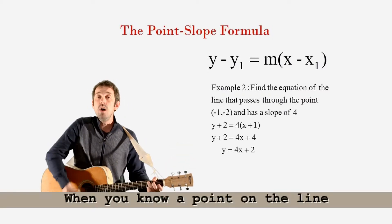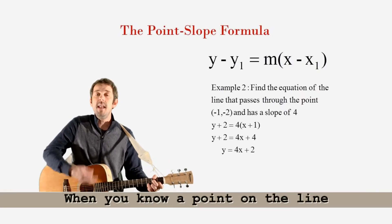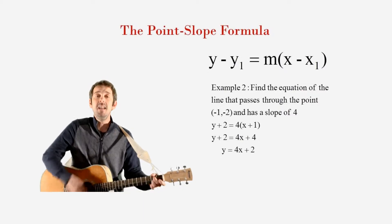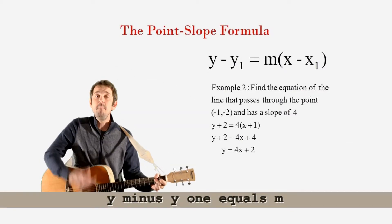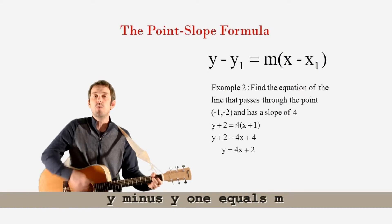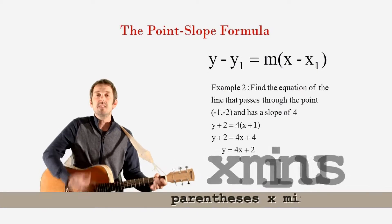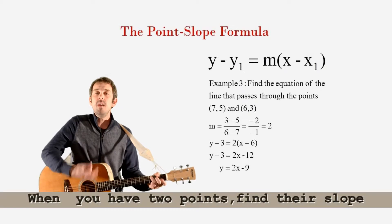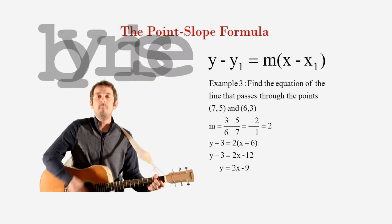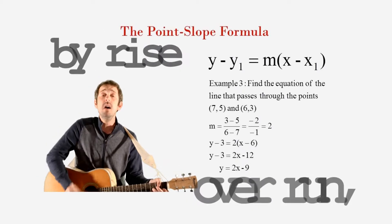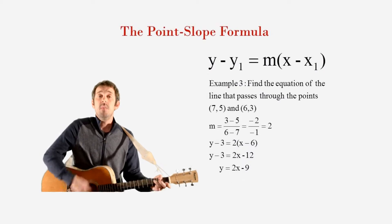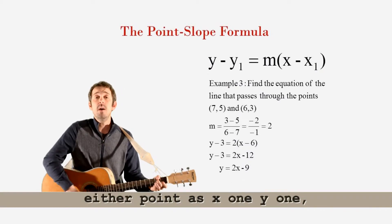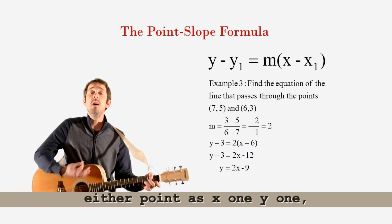When you know a point on the line and the slope of the line, you find y minus y1 equals m parenthesis x minus x1. When you have two points, find the slope by rise over run, then substitute either point as x1, y1.